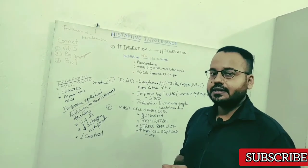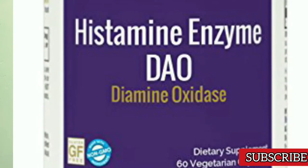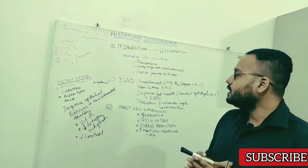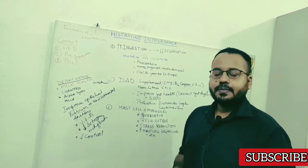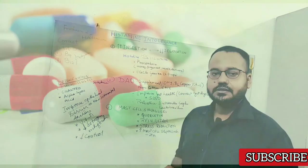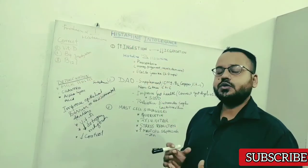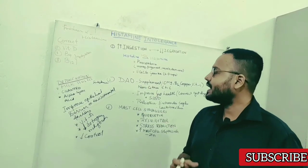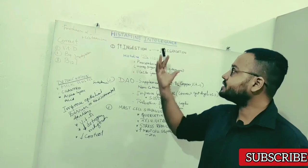Next very important thing is diamine oxidase. This is primarily responsible for degrading histamine in your GI tract. So why will there be decreased activity of this enzyme? The primary culprit is medication like NSAIDs, aspirin, antidepressants, antibiotics, certain heart medications. So these medications can decrease the activity of diamine oxidase and can lead to build up of histamine inside your body leading to histamine intolerance.